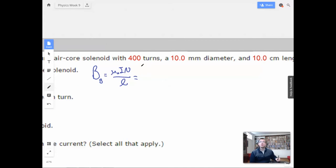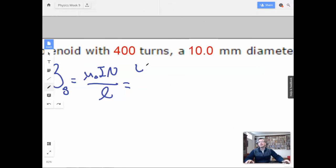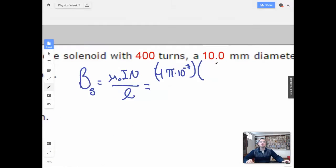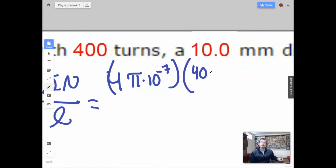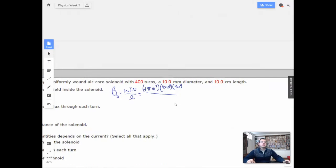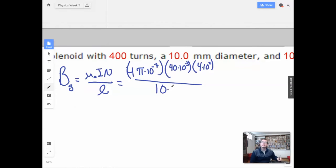They probably give us answers for all of this. So I'm going to say that mu is 4 pi times 10 to the negative 7th. Current is, did they tell us the current? 40 milliamps. So 40 times 10 to the negative 3rd. Number of turns is 400, 4 times 10 to the 2nd, over length, which is 10 centimeters. So 10 times 10 to the negative, I'm going to say 10 to the negative 3rd, no. 10 to the negative 1st.